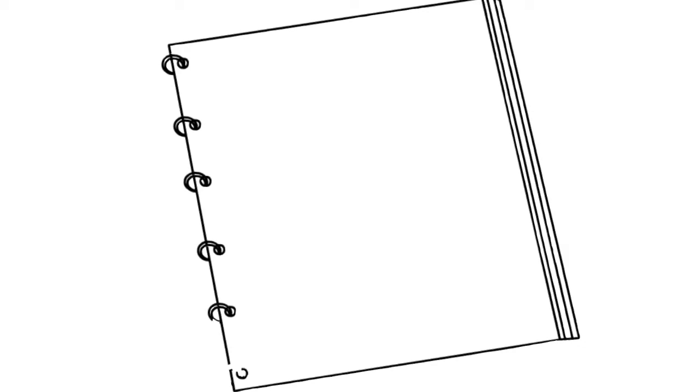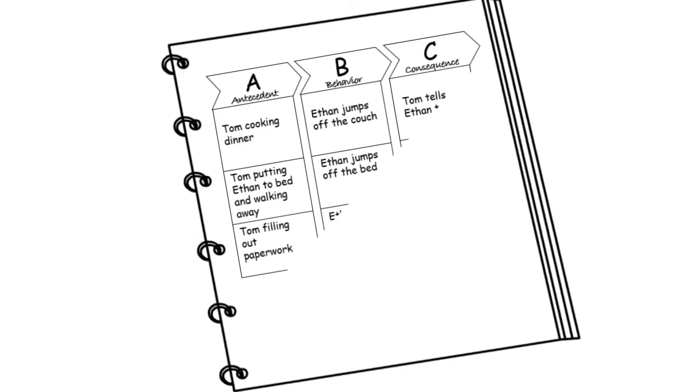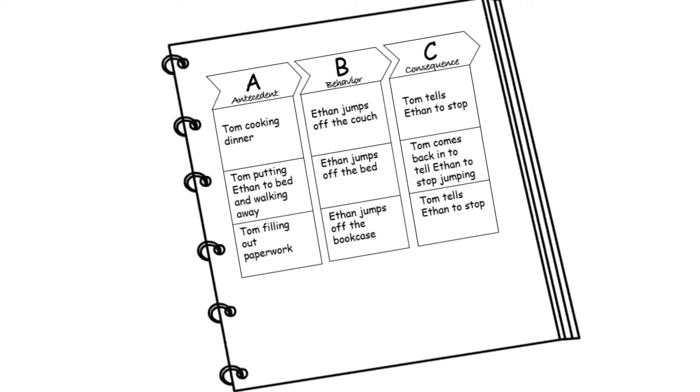When Ethan was busy playing with his trains, Tom took a minute to jot down what happened on the ABC data sheet. He now had enough data to see a pattern emerging. This would help him understand why Ethan jumped and help the BCBA know what to do to change the behavior.